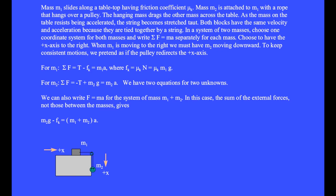The hanging mass drags the other mass across the table. As the mass on the table resists being accelerated, the string becomes stretched taut. Both blocks have the same velocity and acceleration because they are tied together by a string.